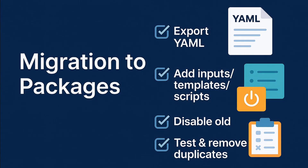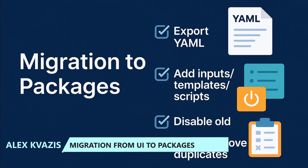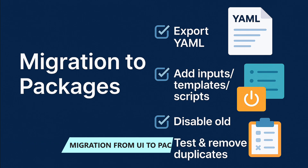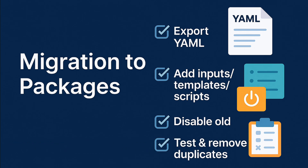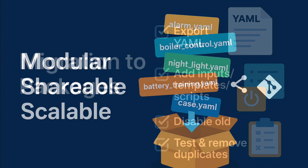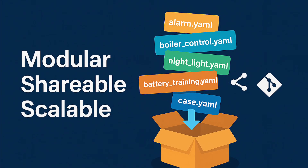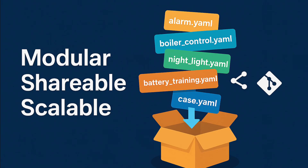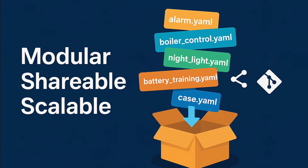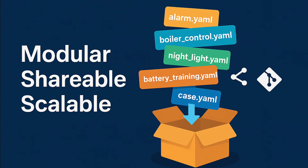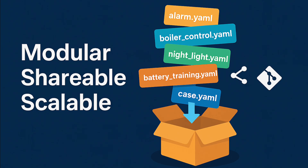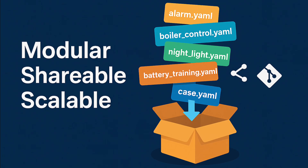Migration from UI to packages: export an existing automation from the UI into YAML and transfer it into the required package. Create input, template, and script right next to it in the same file. Temporarily leave the old version disabled, test the packaged one, and once you are sure it works, delete or disable the duplicates from the UI. Result: the principle 'one case, one package' turns your smart home into a set of modular bricks. A new task appears — create a new package. Need to share a solution — send one file. Order, control, and scaling speed — that's what you get.